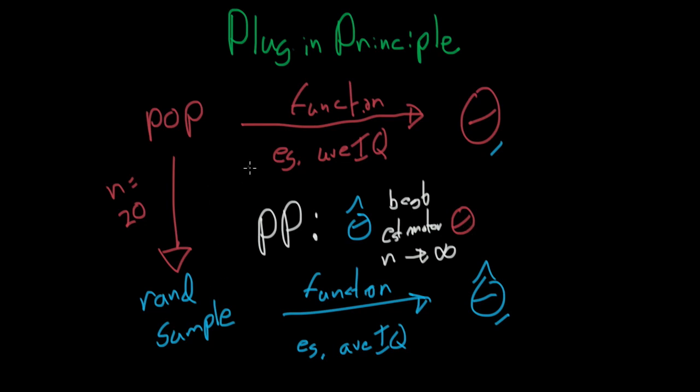The plug-in principle will allow us to make great estimates from the sample to the population, and also to classify our confidence in those estimates. If we only sample 20 people and get their average height, we can with some confidence say what the average height of people in the United States is — which is magical. This allows us to do lots of powerful stuff later on. Stay tuned, and if you didn't understand it, please post questions and comments down below.